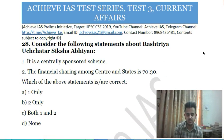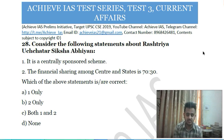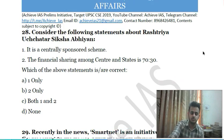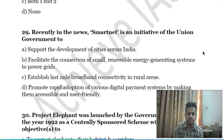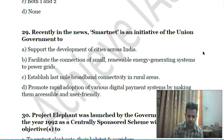Twenty-eighth question: consider the following statements about Rashtriya Uchchatar Shiksha Abhiyan (RUSA) — first, it is a centrally sponsored scheme; second, the financing ratio between center and states is 70:30. Choose the correct answer.